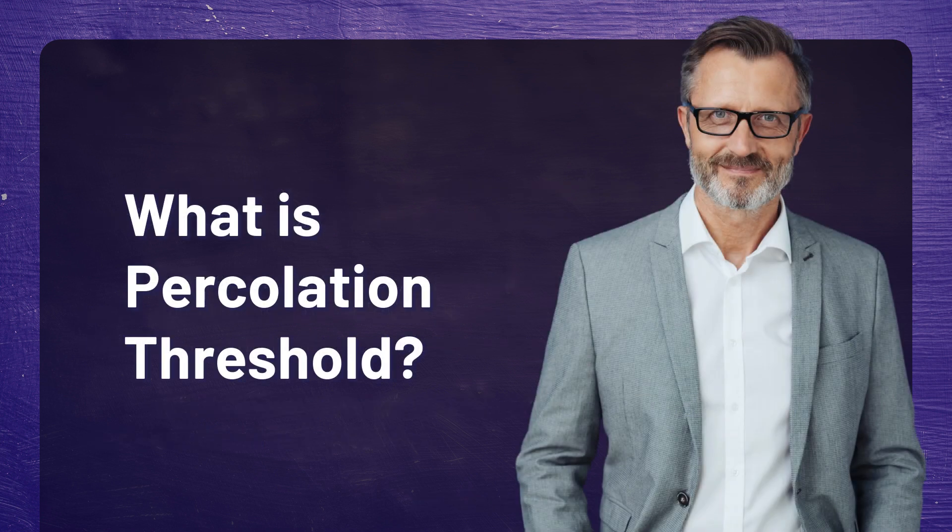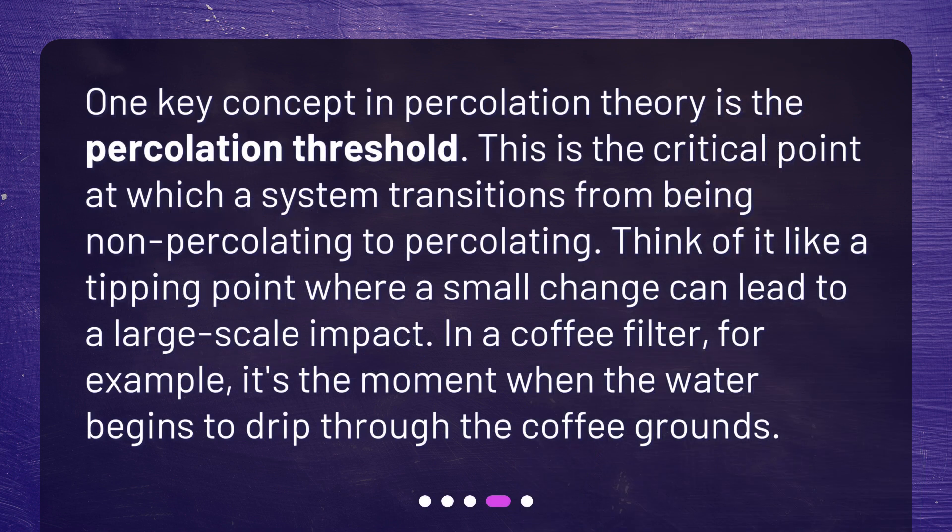What is the percolation threshold? One key concept in percolation theory is the percolation threshold — the critical point at which a system transitions from being non-percolating to percolating. Think of it like a tipping point where a small change can lead to a large-scale impact. In a coffee filter, for example, it's the moment when the water begins to drip through the coffee grounds.